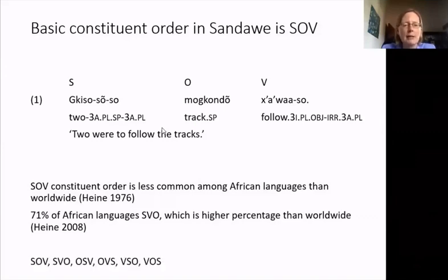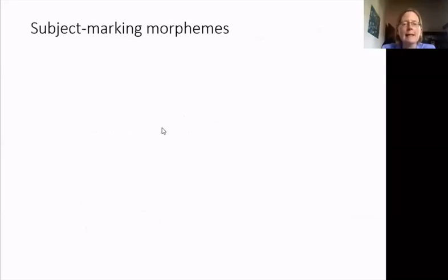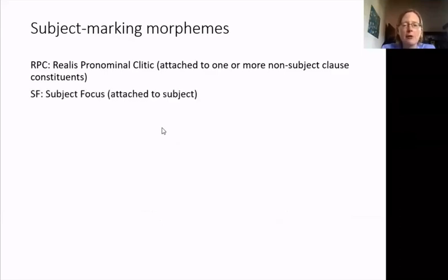This is a key point in understanding constituent order variation in Sandawe: it's possible without ambiguity because subject marking makes it so. All six logically possible orders of S-O-V are grammatical in Sandawe. In realis clauses, the distribution of subject marking morphemes will very commonly make it clear which constituent is the subject and which is the object, regardless of position. When I say subject marking morphemes, I mean either the realis pronominal clitic (RPC), which attaches to one or more non-subject clause constituents and agrees with the subject, or the subject focus marker, which attaches to the subject itself.